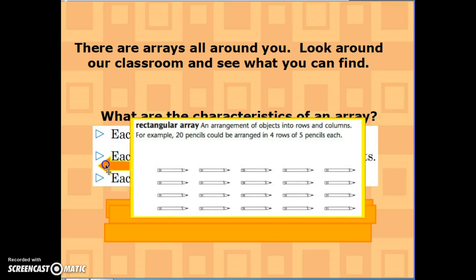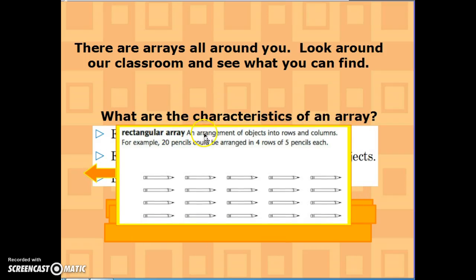So here's the definition of a rectangular array. It's an arrangement of objects into rows and columns. For example, 20 pencils can be arranged into four rows of five pencils each. So you can see we have our four rows of five in each row. That's an example of an array.